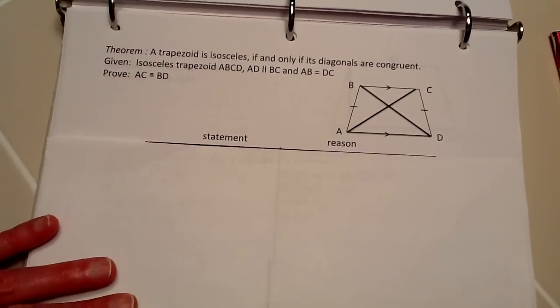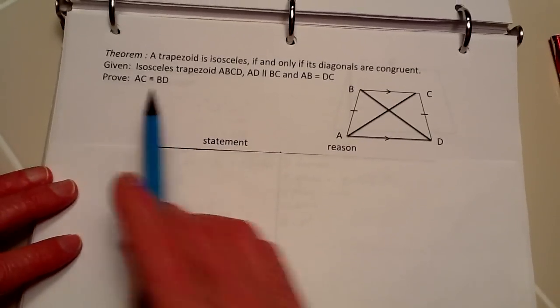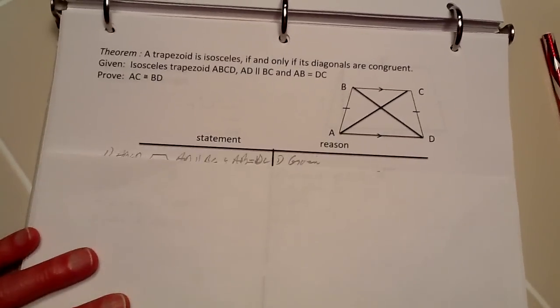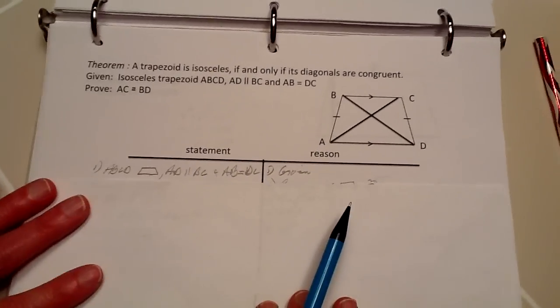What we're going to do now is prove that the diagonals AC and BD are congruent. Our first step is to put down our given, which is the isosceles trapezoid ABCD.